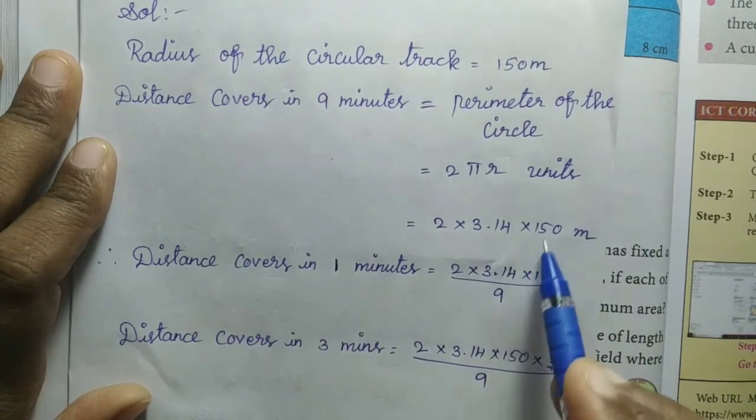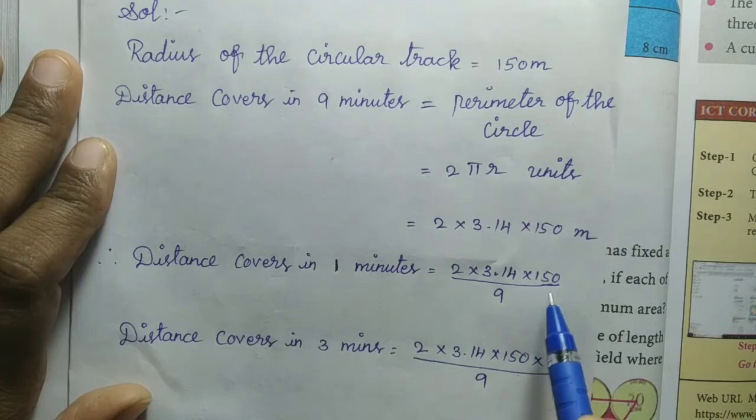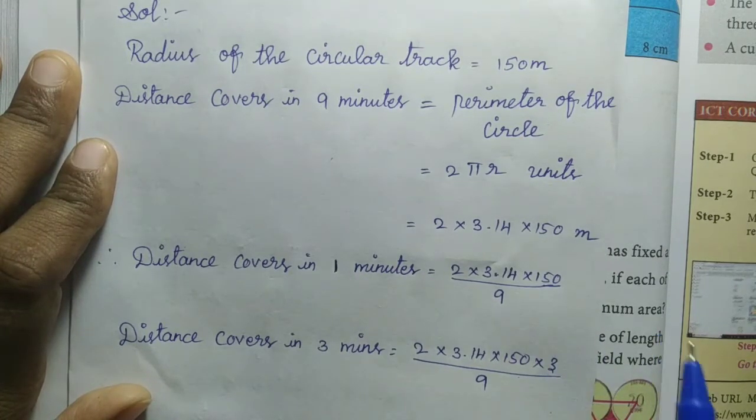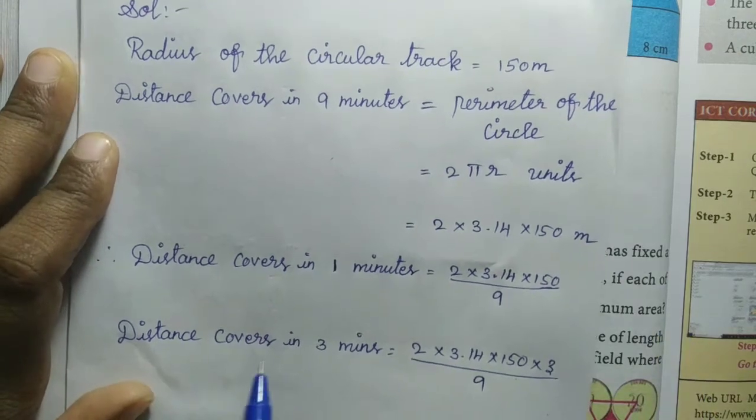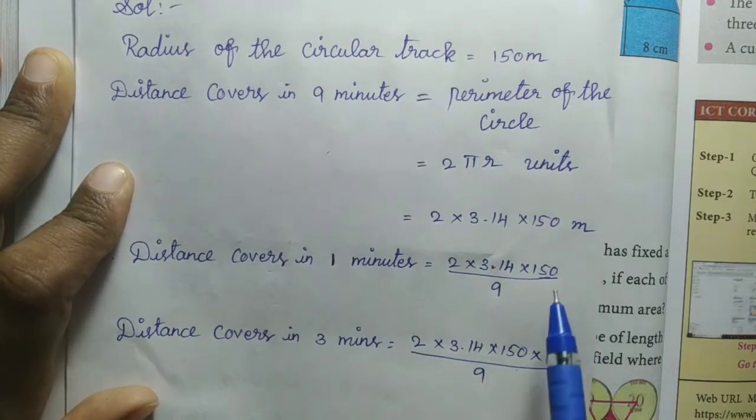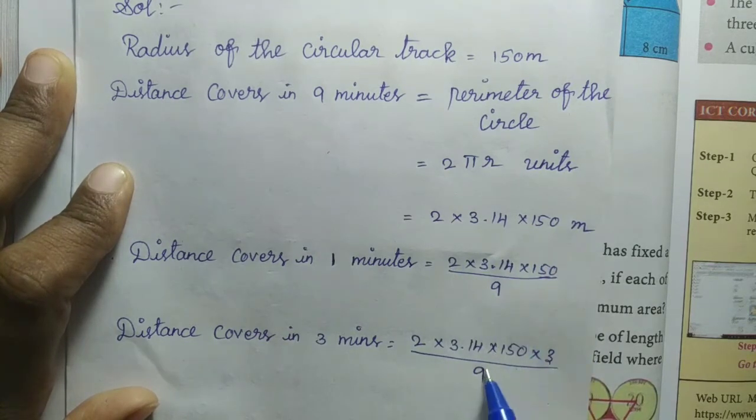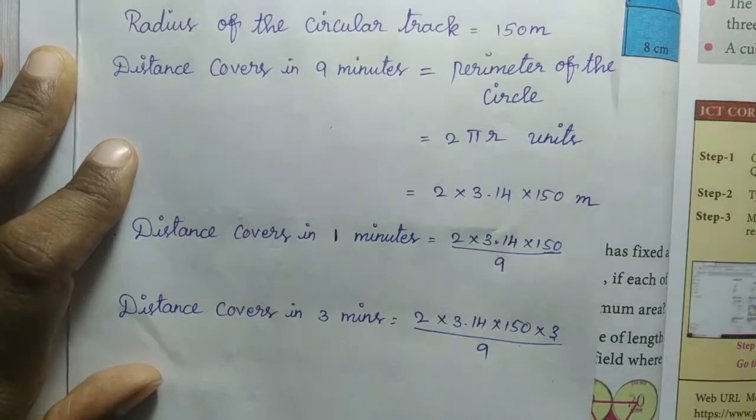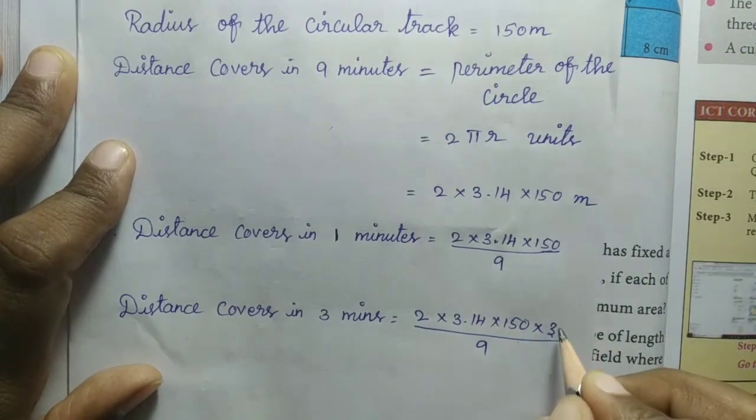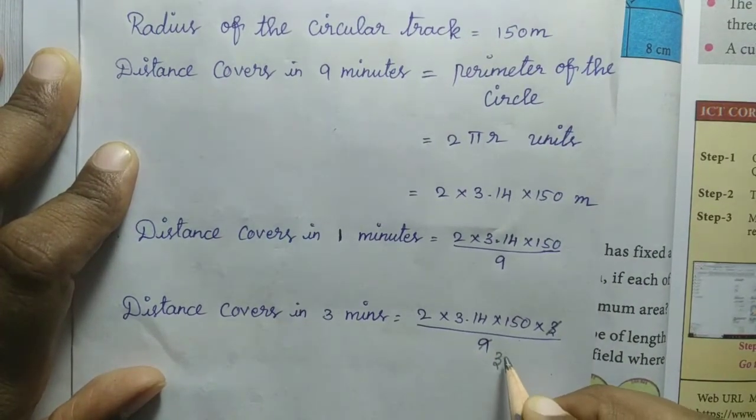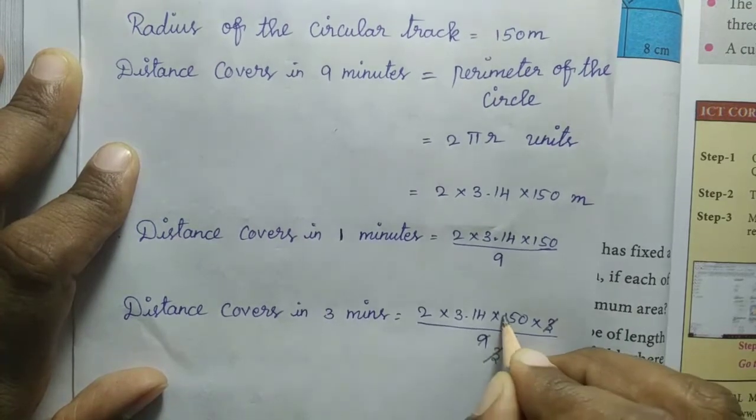So 2 × 3.14 × 150 divided by 9 gives us the distance covered in 1 minute. For the distance covered in 3 minutes, we multiply by 3. So the overall calculation is (2 × 3.14 × 150 × 3) / 9. We can simplify: 3 goes into 9 three times.